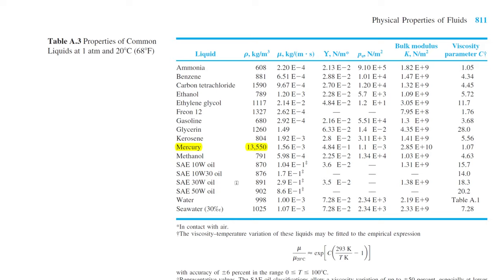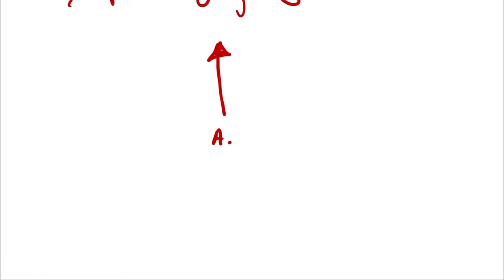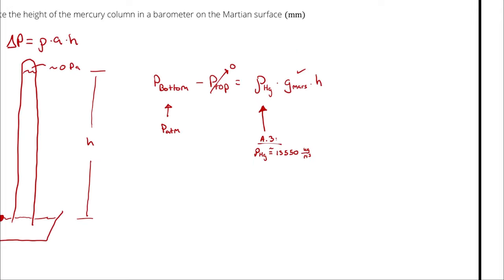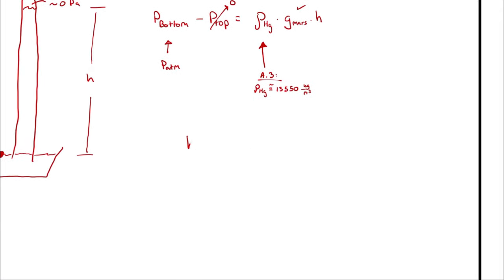So from table A3, the density of mercury is about 13,550 kilograms per cubic meter. At this point, everything in our equation is known except for H, so we can solve for H. That would be P bottom minus P top, which is just P bottom, divided by the density of mercury times gravity.